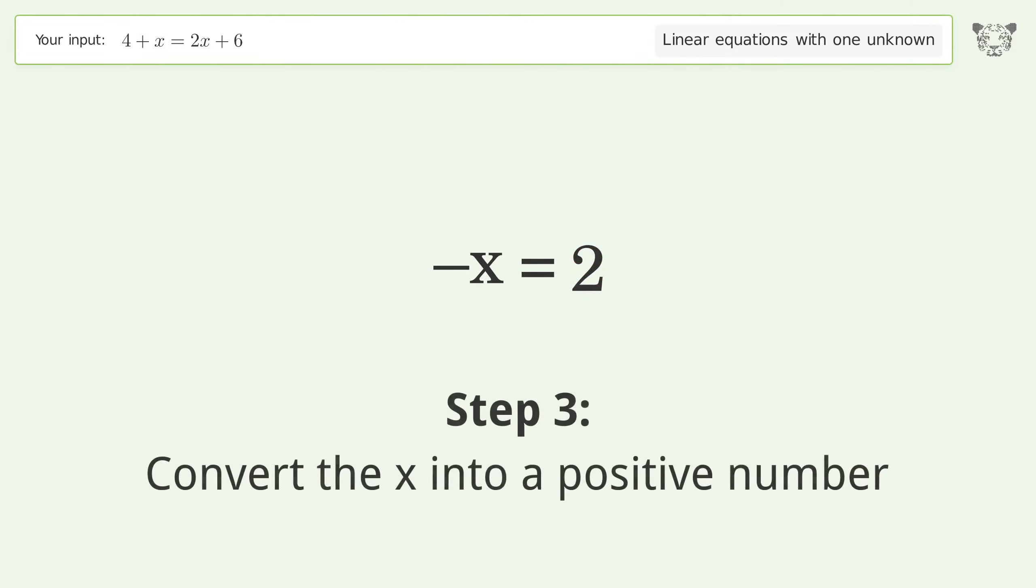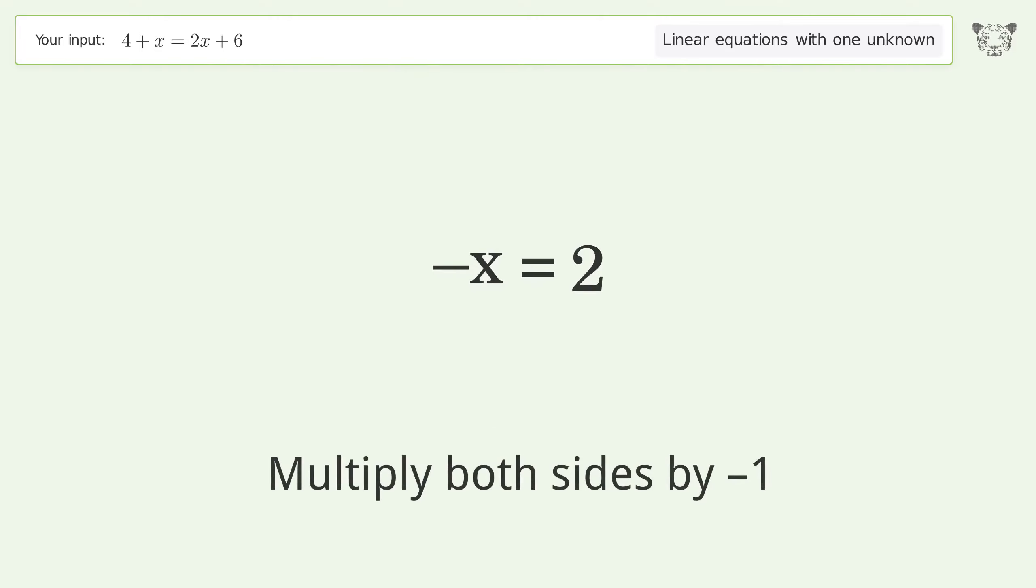Convert the x into a positive number. Multiply both sides by negative 1. Remove the ones. Simplify the arithmetic.